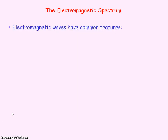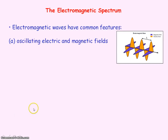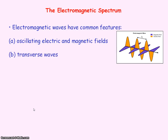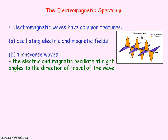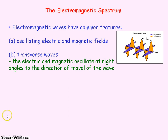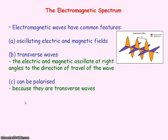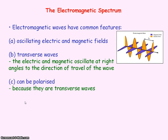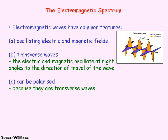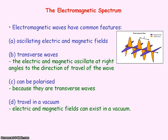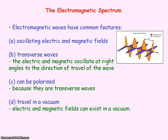The common features of electromagnetic waves are that they are made up of oscillating electric and magnetic fields. They are all transverse waves, meaning the electric and magnetic fields oscillate at right angles to the direction of travel of the wave. Because they are transverse waves they can be polarised — that's a feature of only transverse waves — so the oscillations can be confined to one plane only. They can all travel in a vacuum, that is empty space, because electric and magnetic fields can exist in a vacuum.